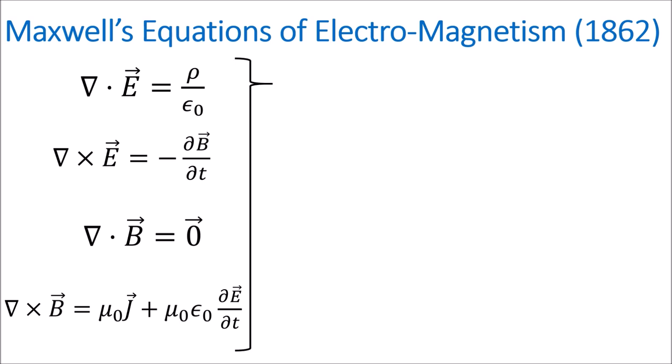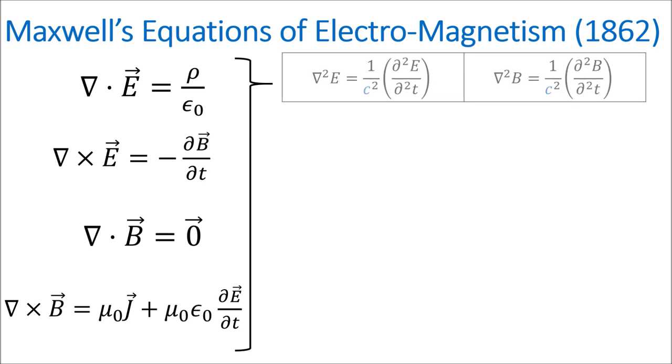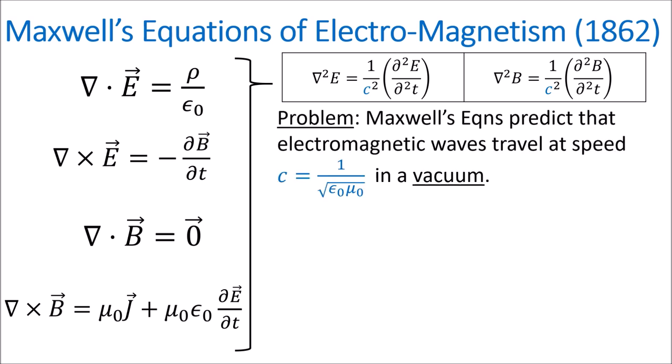When we combine all four of the equations together, we get equations for electromagnetic waves, or in other words, light. The equations say that light will travel in a vacuum at a speed denoted by c, which is 300 million meters per second, or 3 times 10 to the 8 meters per second.